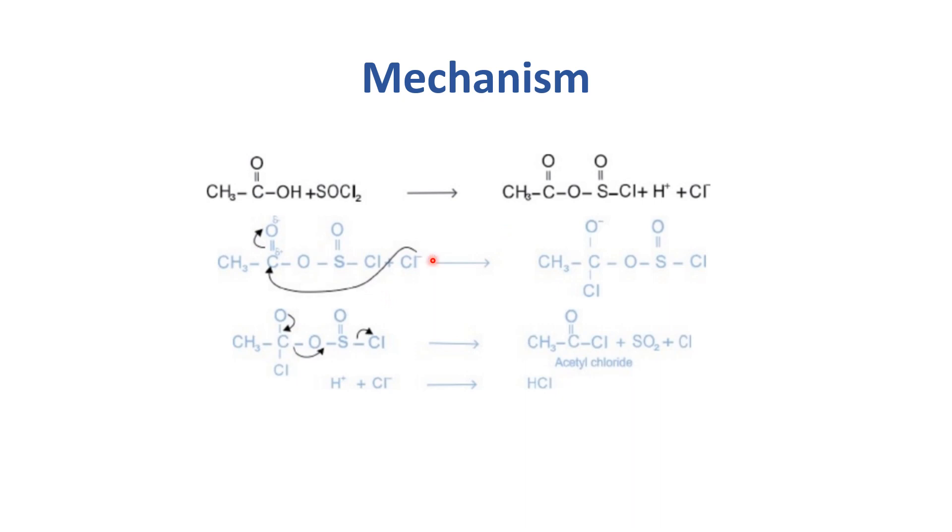In the next step, the dissociated chloride attacks the carbonyl carbon because it has a partial positive charge. These two electrons move here and form an adduct.